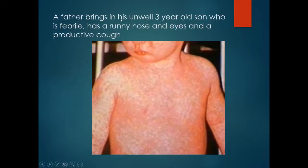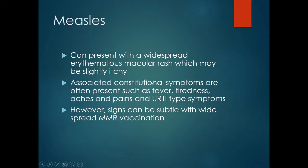A father brings in his unwell three year old son, who is febrile, has a runny nose and runny eyes, a productive cough, and a widespread macular rash. Typical presentation for measles, though this is rarely seen these days due to measles vaccinations.